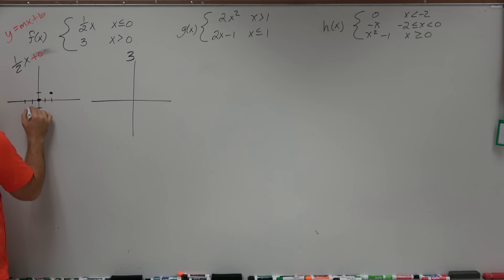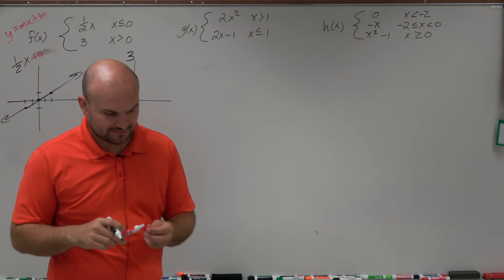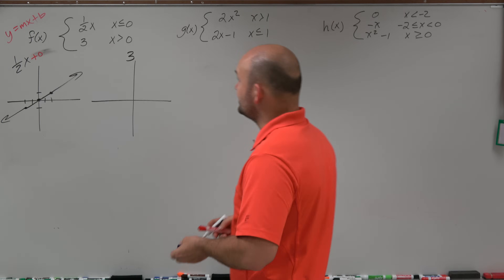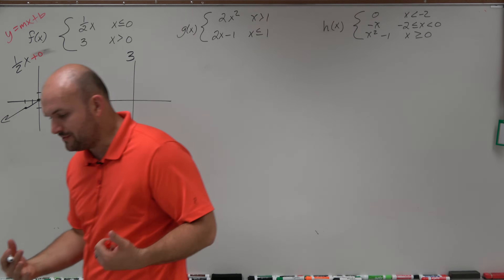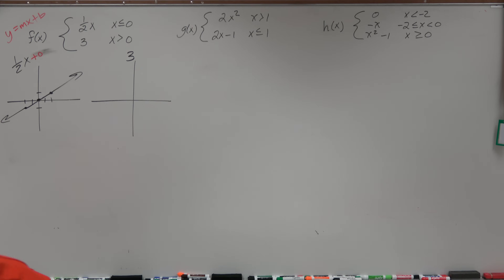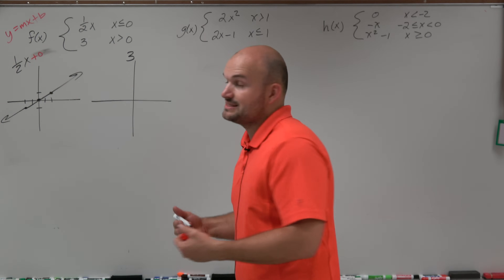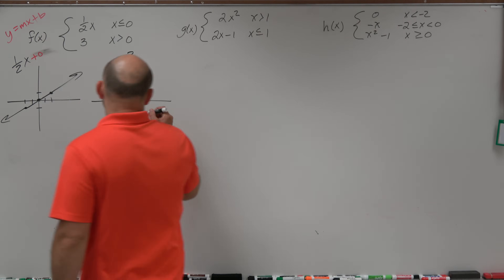You could also go down one to the left two. Let's just do a couple of points to get a line. For the next one, we have the function at three. When you just have a value of three, basically that's going to be your y-value — your output value is at three.